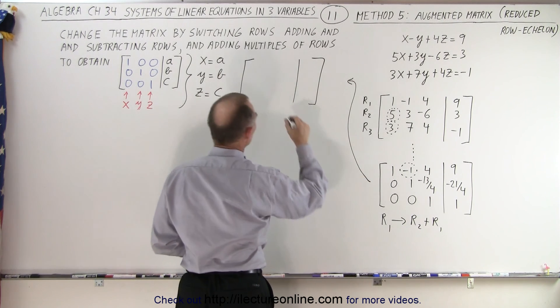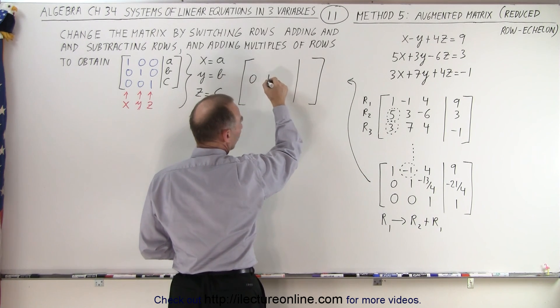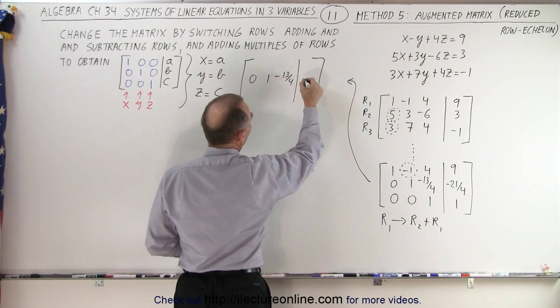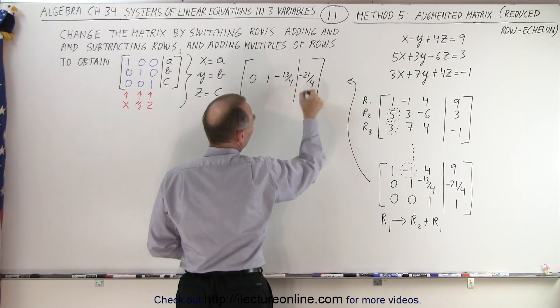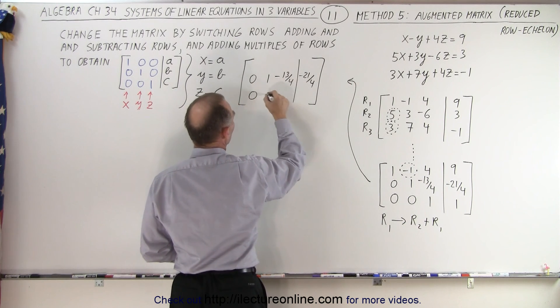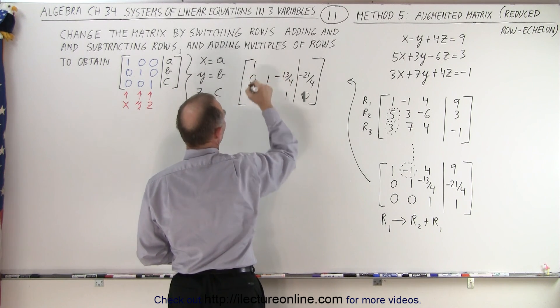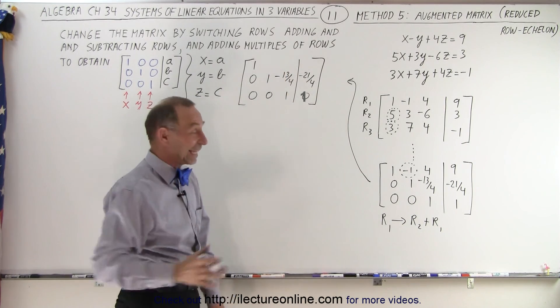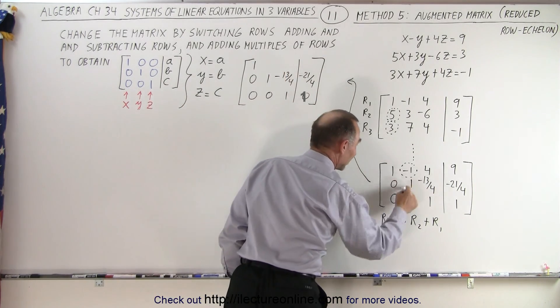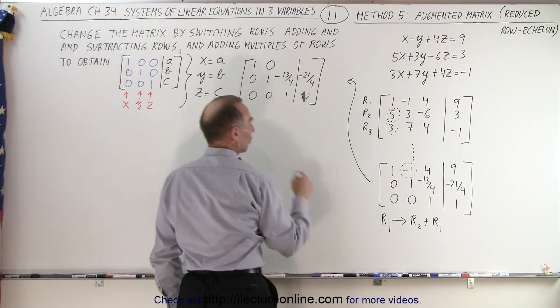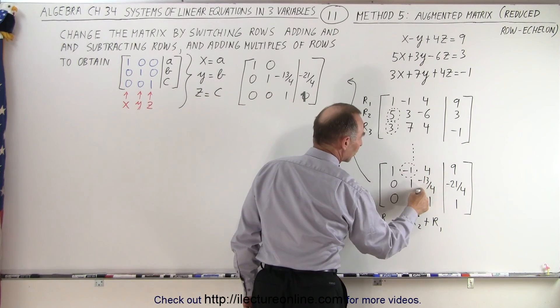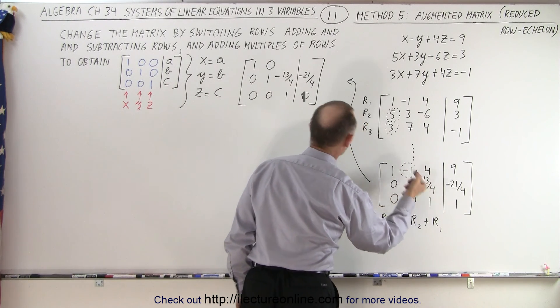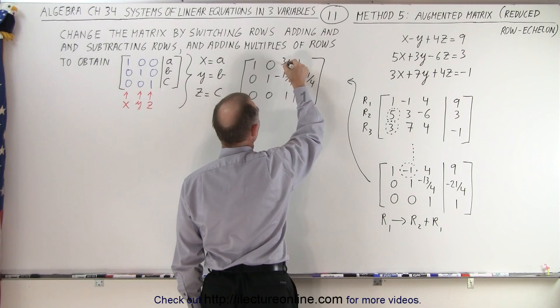So row two and three do not change. So I get a zero, a one, minus 13 over four, minus 21 over four. I get a zero, a zero, a one, and a zero. Here I end up with a one, but now this wants to become a zero. We want to make it into a zero. So add these two together, we get zero. So what happens when we add these two together? Well, four is like 16 over four minus 13 over four. That would be three over four. So we end up with three over four here.